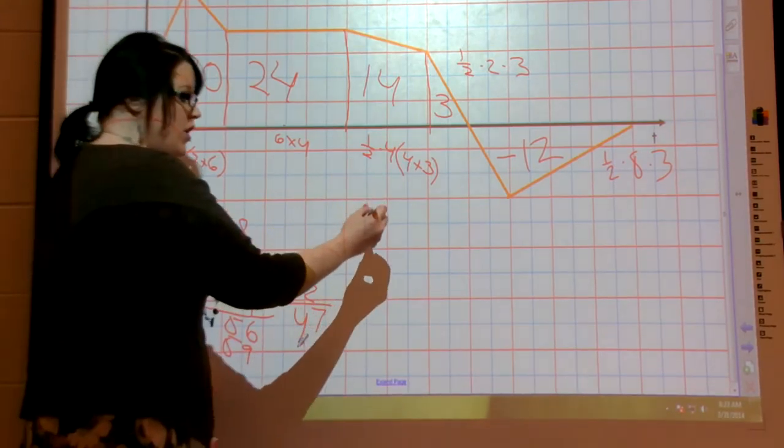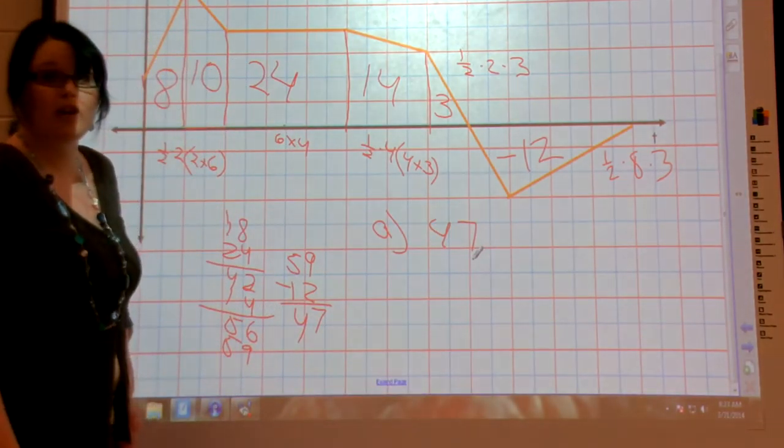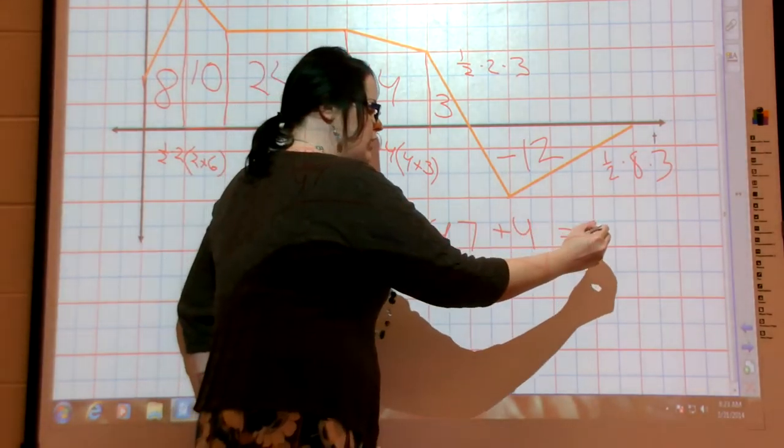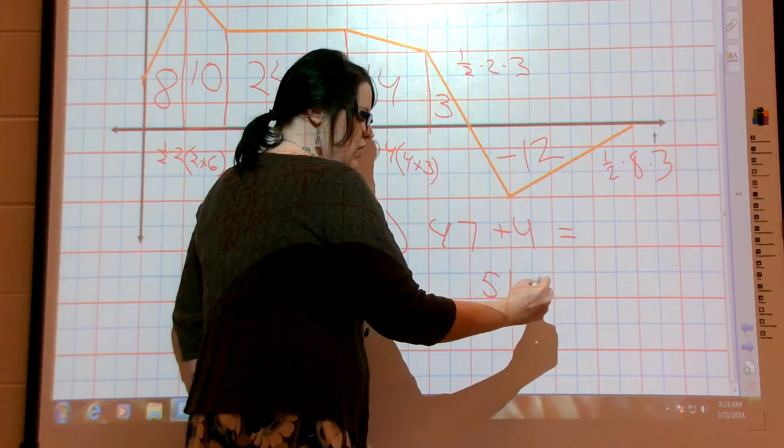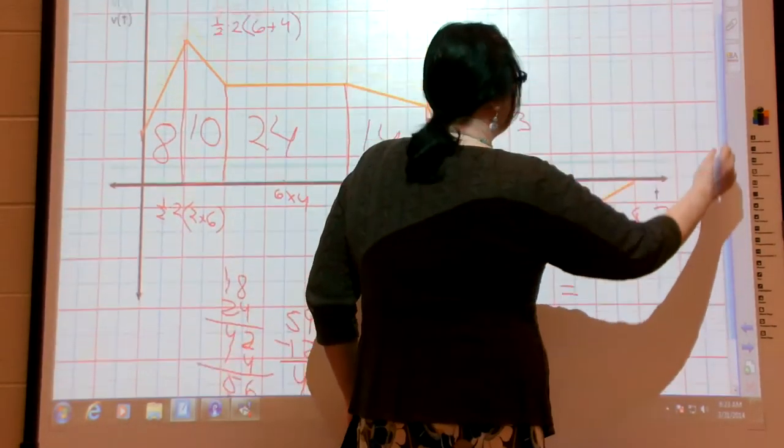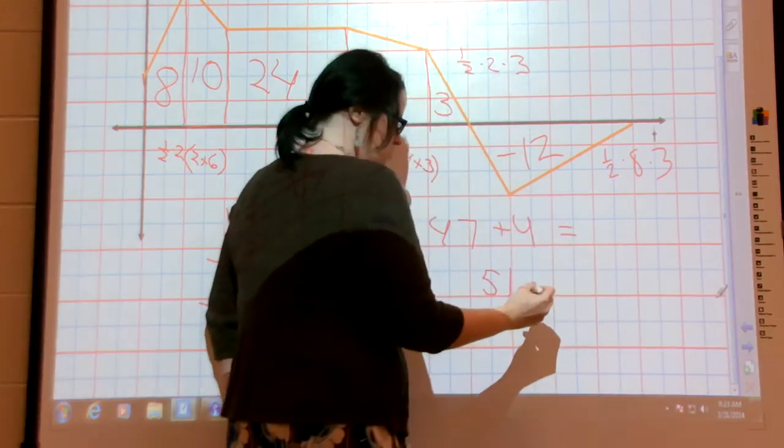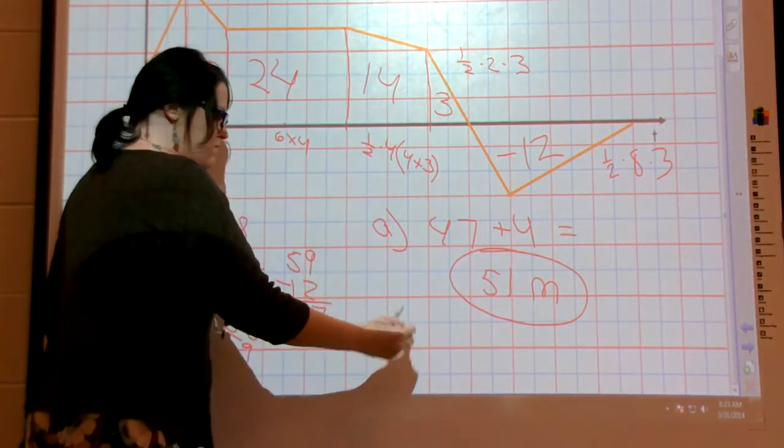So for part A I'm going to take 47. That's how much it moved. But where did it start? 4. So really it is at 51. 51. Do I have units here? No. We'll say it's meters.